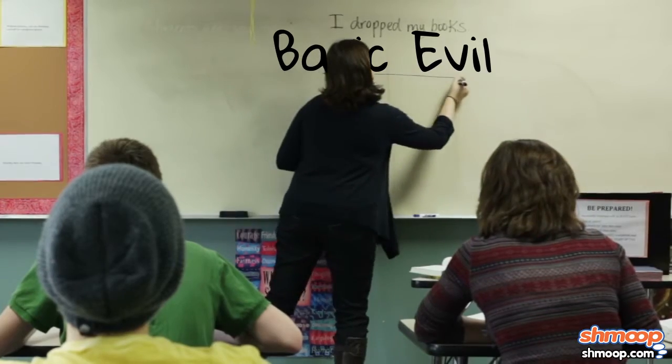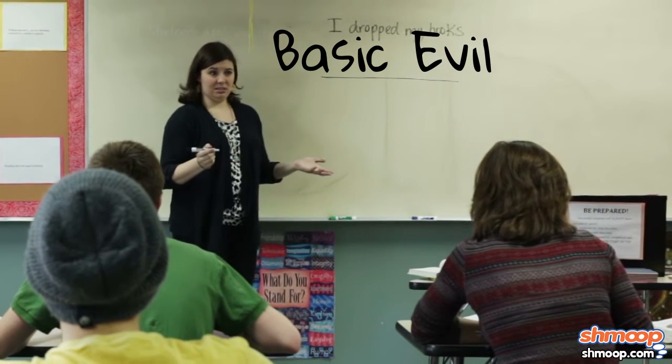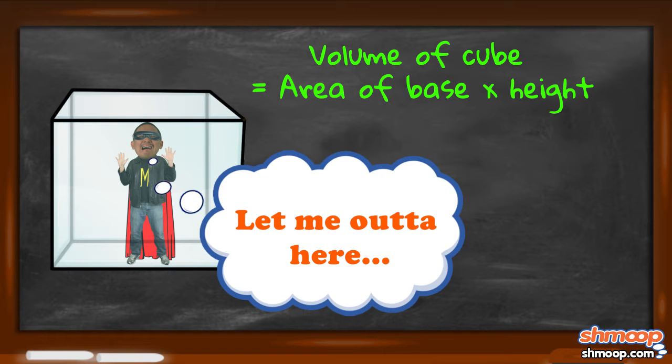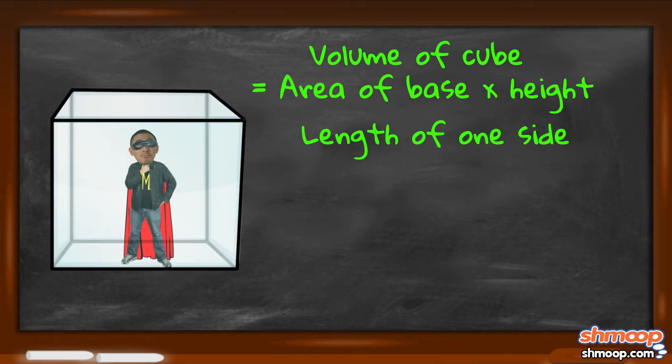Of course, supervillains learn all of the volume formulas in Evil 101. So Maldimov knows that the volume of a cube is the area of the base multiplied by the height. To find the length of just one side,